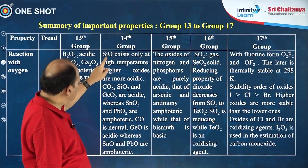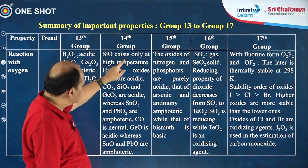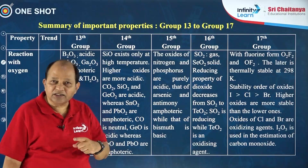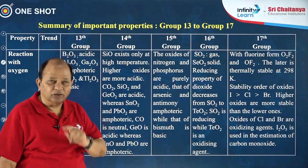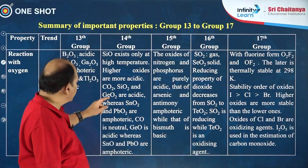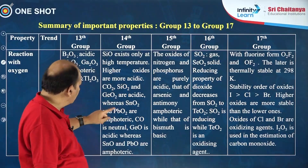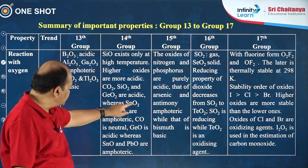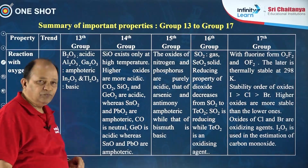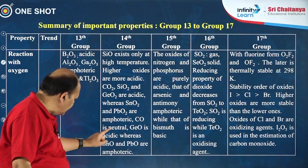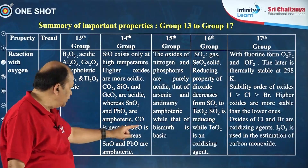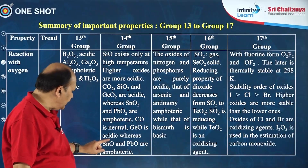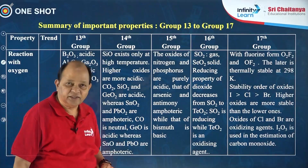Concerning group 14, SiO exists only at higher temperature. Usually higher oxides are more acidic than lower oxides. CO2, SiO2, and GeO2 are acidic, whereas SnO2 and PbO2 are amphoteric. Carbon monoxide is neutral; GeO is acidic, whereas SnO and PbO are amphoteric.